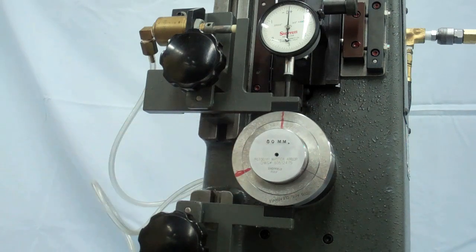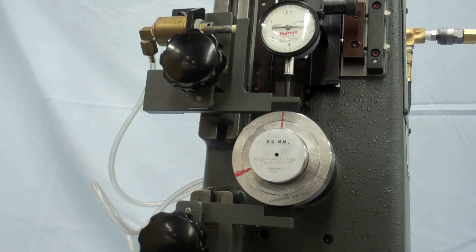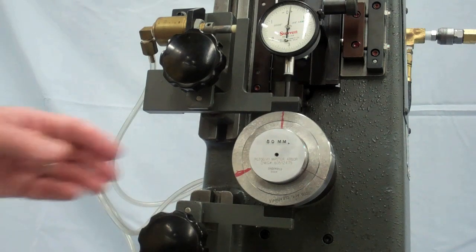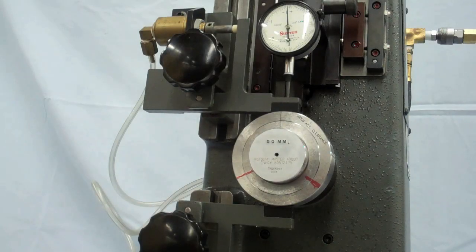The end user of the radial play gauge will decide how many points they check the bearing. Three is common, five is not unheard of, and even just a single check is done.